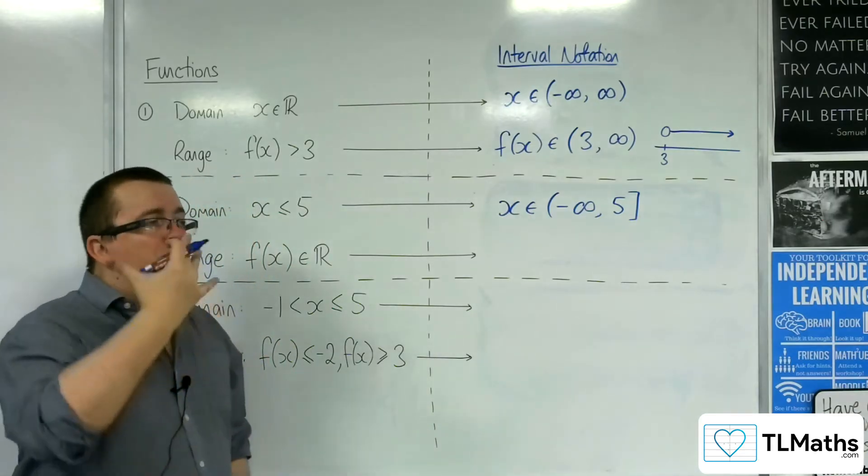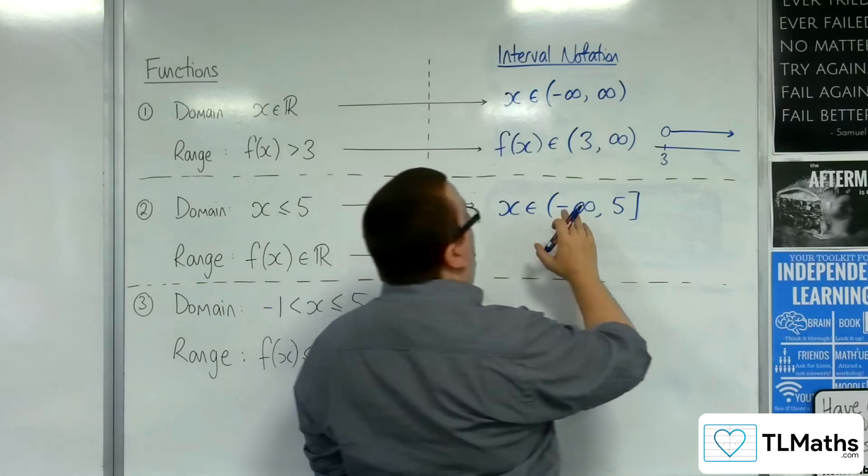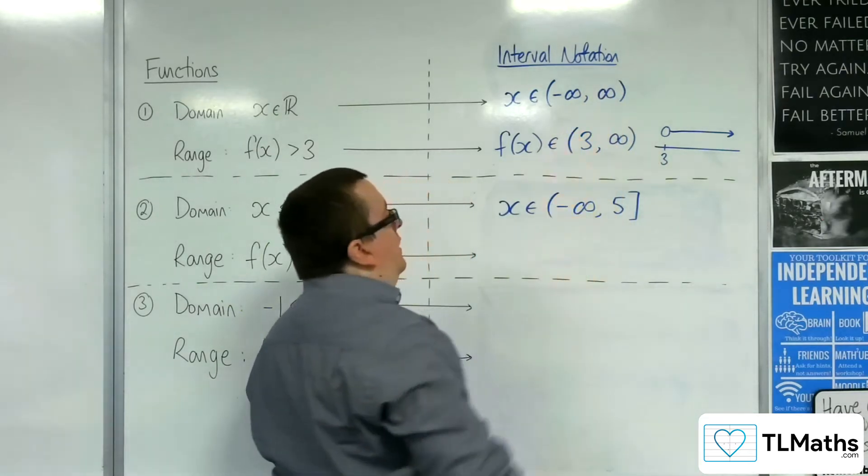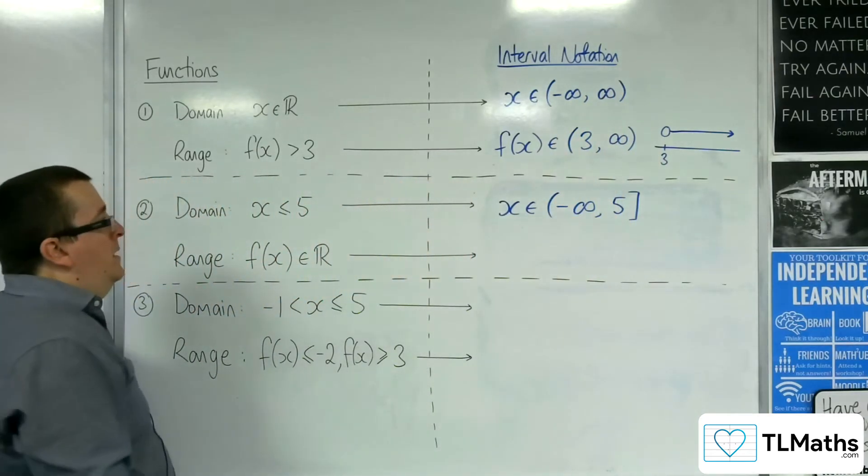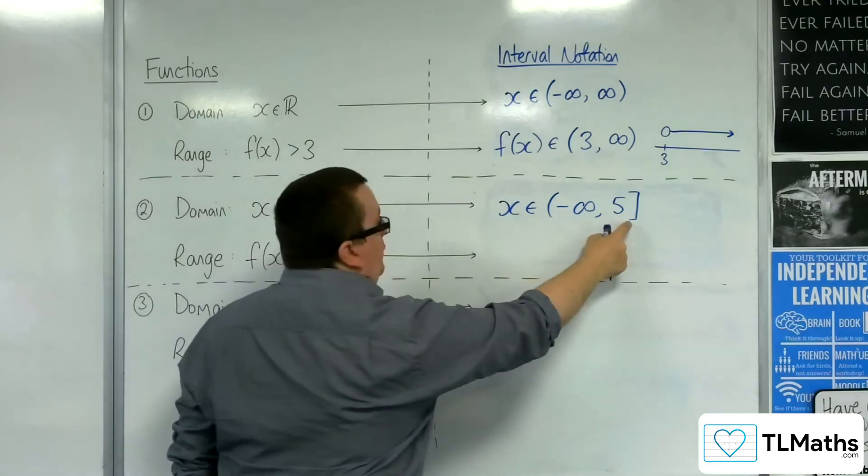So, a square bracket gets used when it is included. So, as I said, infinity will always have a curved bracket, but the equality here is telling you to use a square bracket.